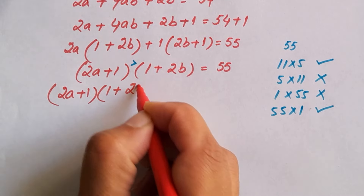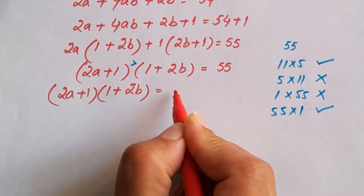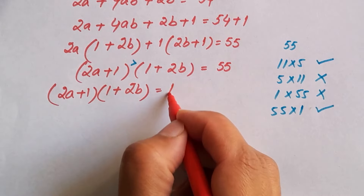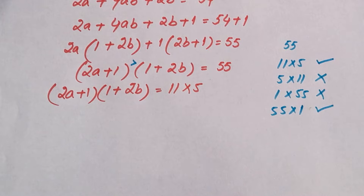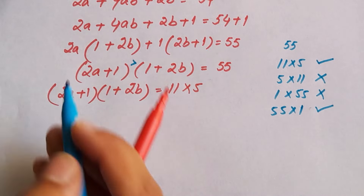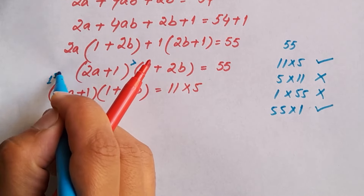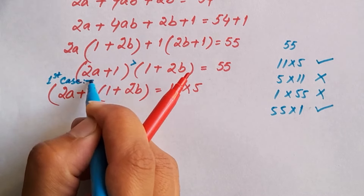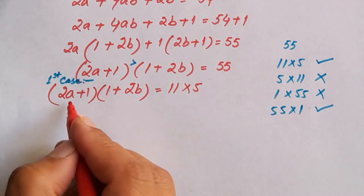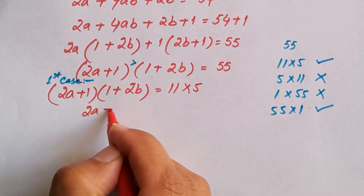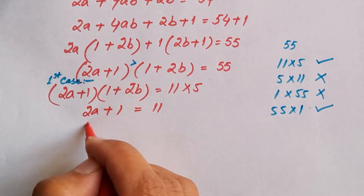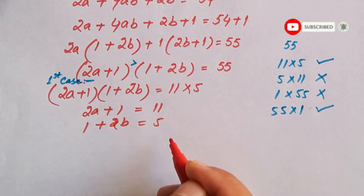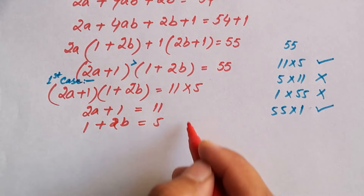The first case is (2a plus 1)(1 plus 2b) equal to 11 times 5. Comparing right-hand side to left-hand side: 2a plus 1 is equal to 11, and 1 plus 2b is equal to 5.